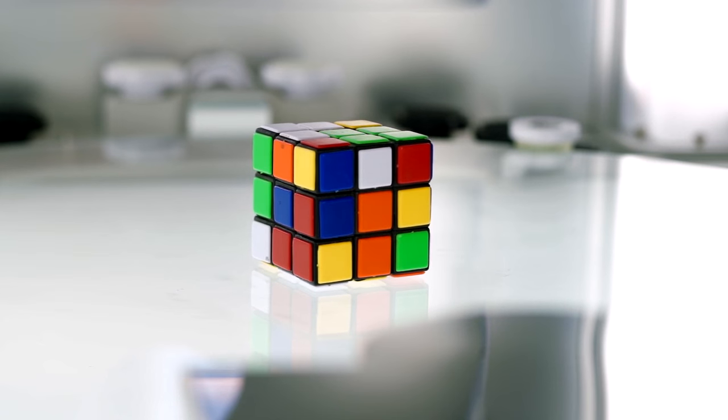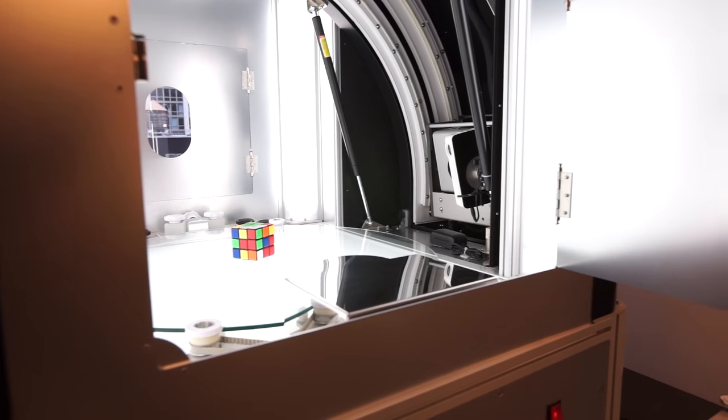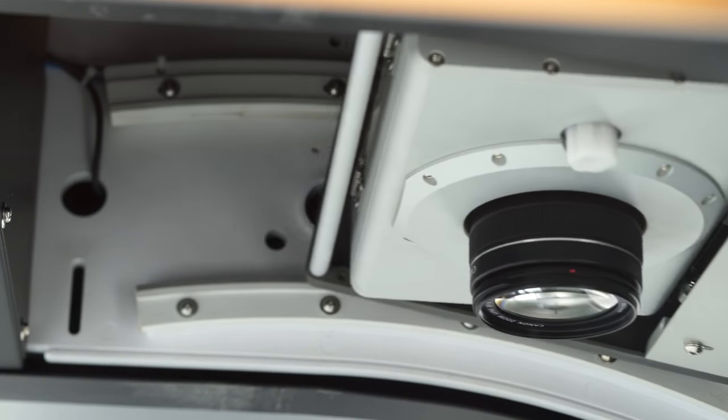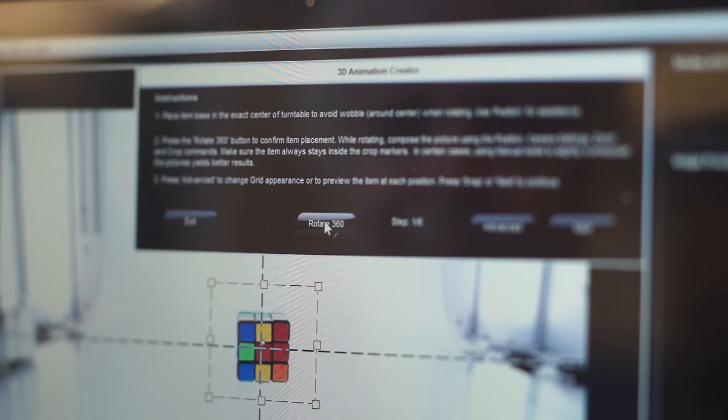The 3D MFP consists of a light box, a turntable, a movable Canon T5i camera, a Pico projector, a stand, and software.